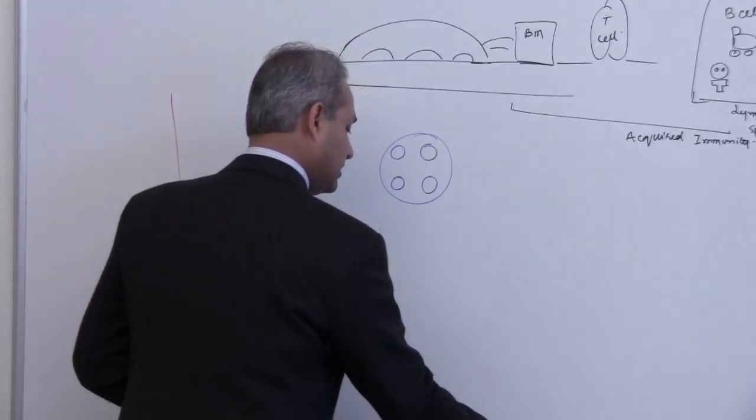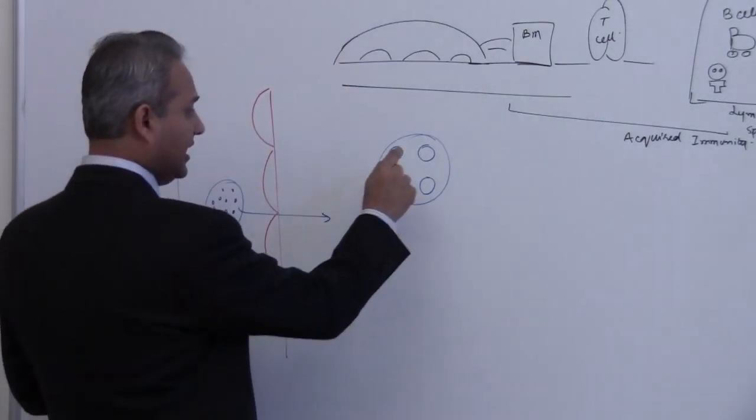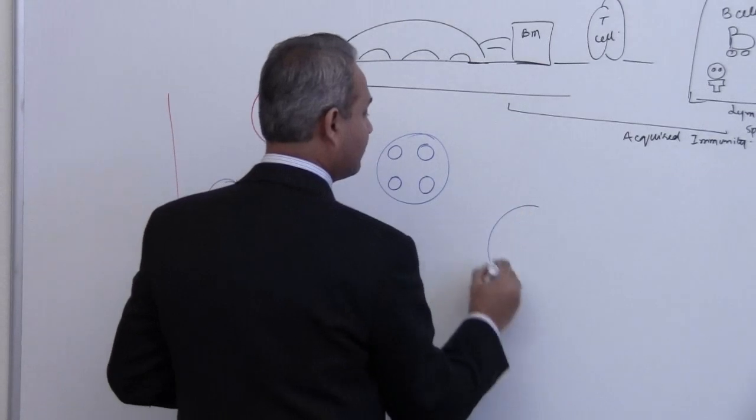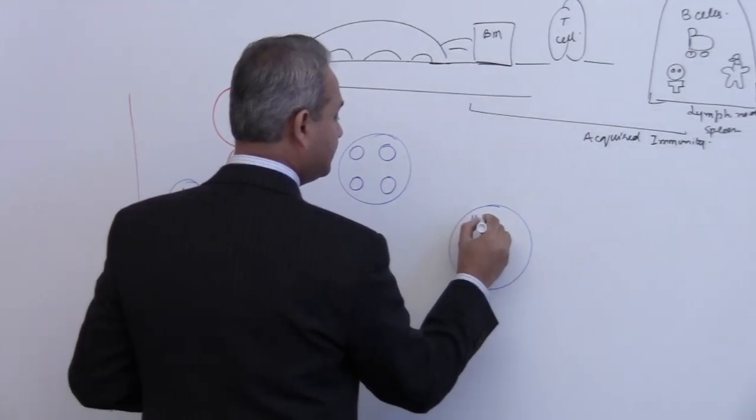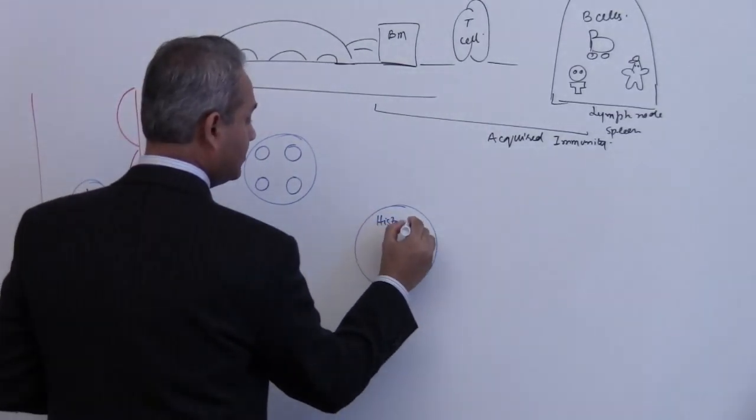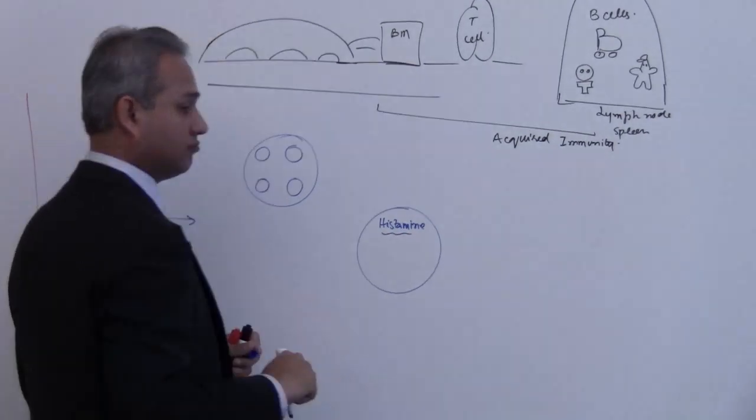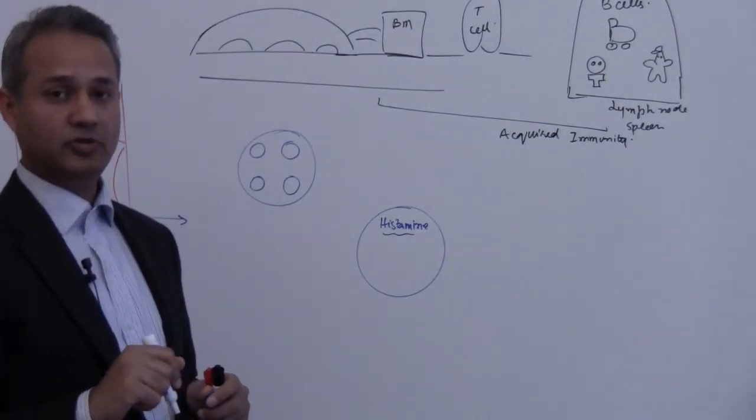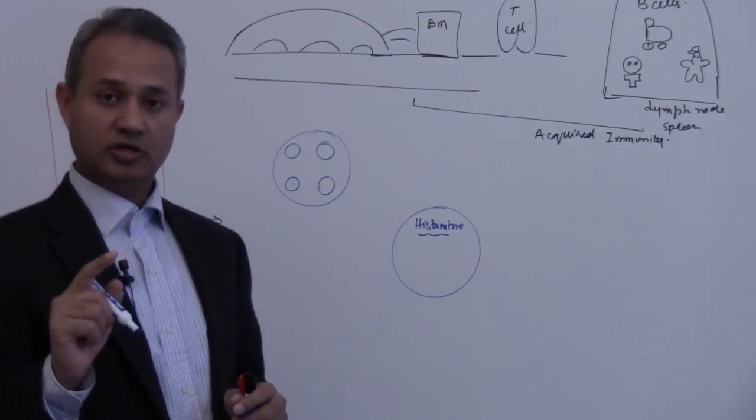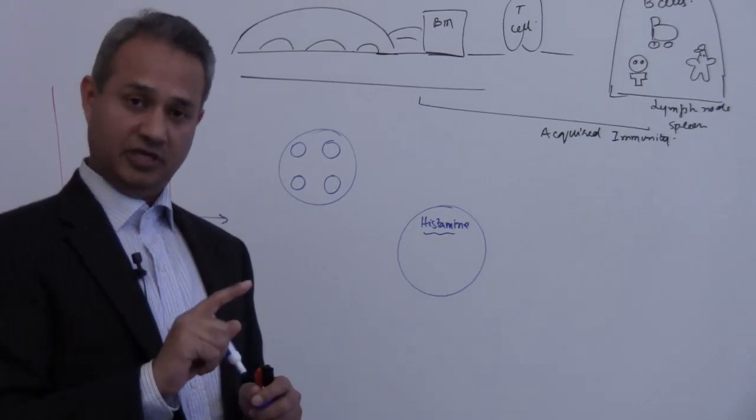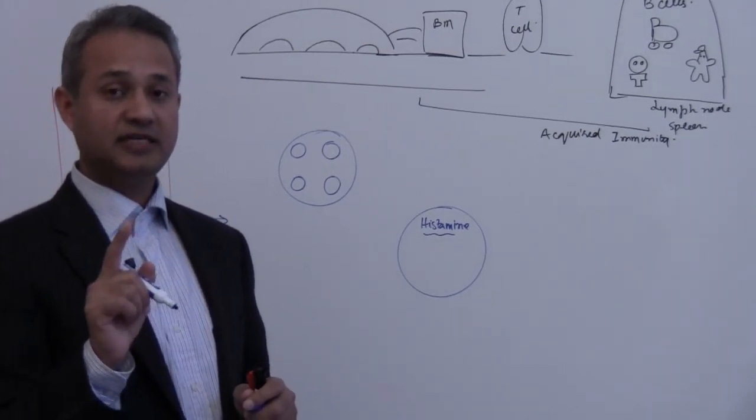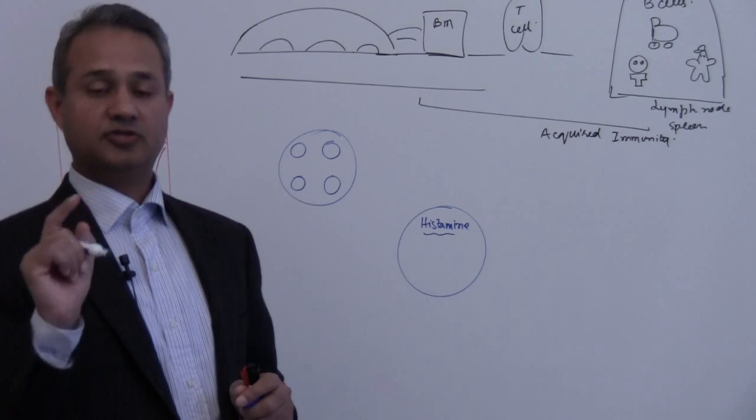The basophils or the mast cells inside the granules have histamine, and histamine is a very strong vasoactive amine plus a smooth muscle contractor.